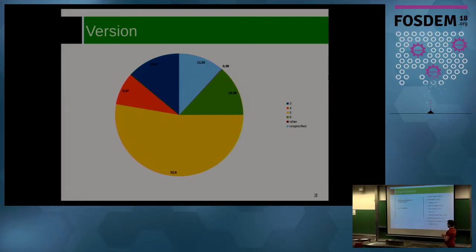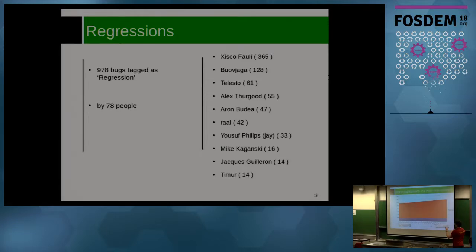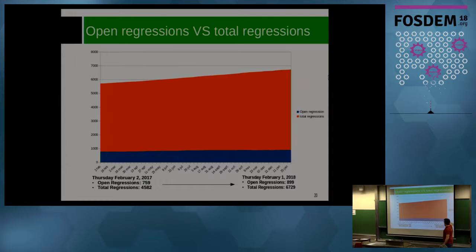An important part of triaging is tagging bugs. One important tag I want to highlight is regression. During this period, around 1,000 bugs were tagged as regression by 78 people. Looking at the chart over time, the number of open regressions is fairly flat, though slightly going up. The total number of regressions in Bugzilla is growing faster, but the open regressions — the ones we need to care about — are flat. Ideally it should go down, but as long as it's flat, it's okay.